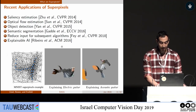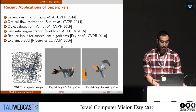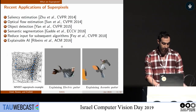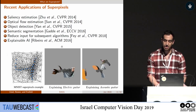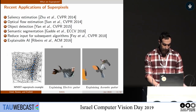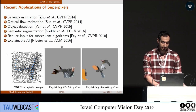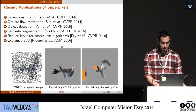Fay et al. used superpixels as input to a graph neural network, where each superpixel is a node in a graph and we have edges between neighboring superpixels. They managed to get comparable results using this reduced input. Another application is explainable AI, where superpixels are used to segment the image and identify which segment explains the class with the highest probability.